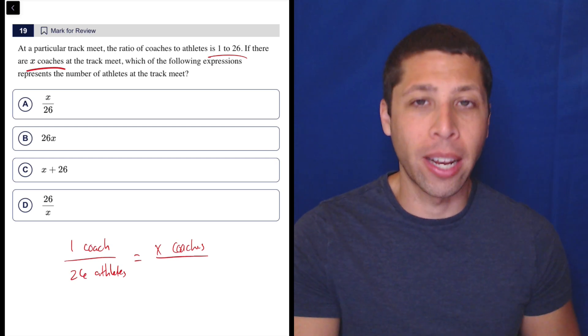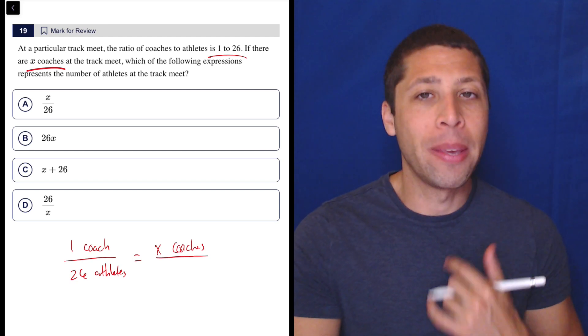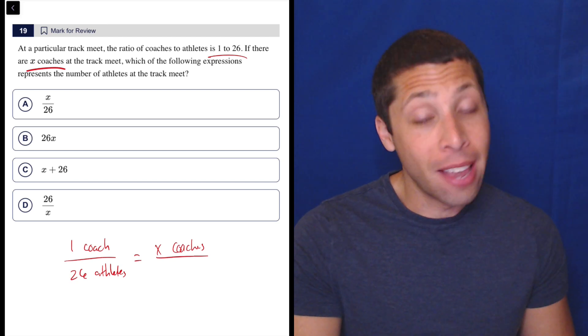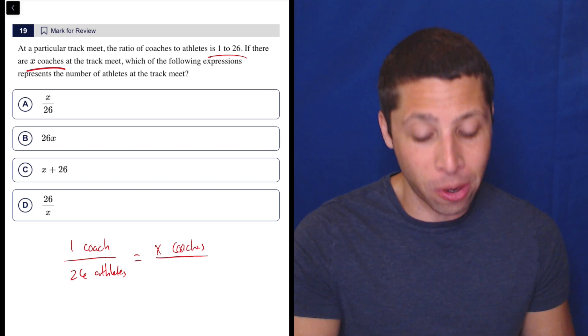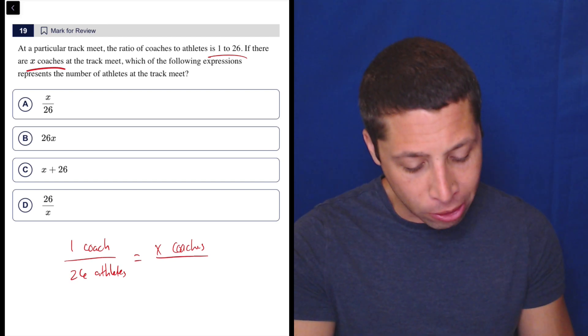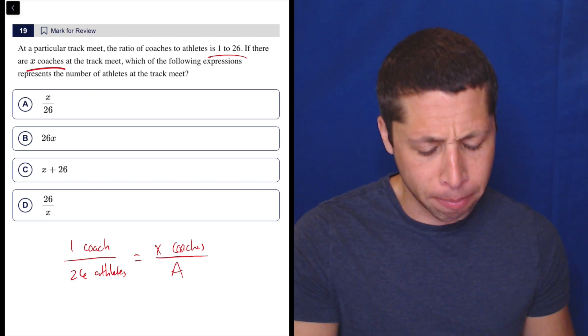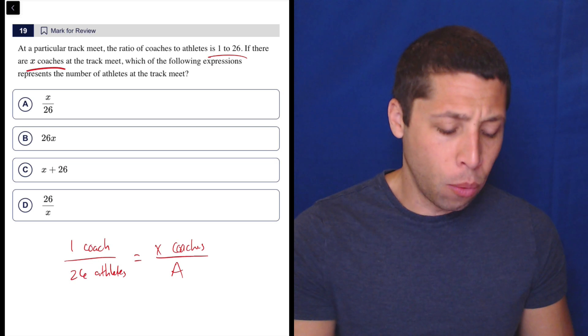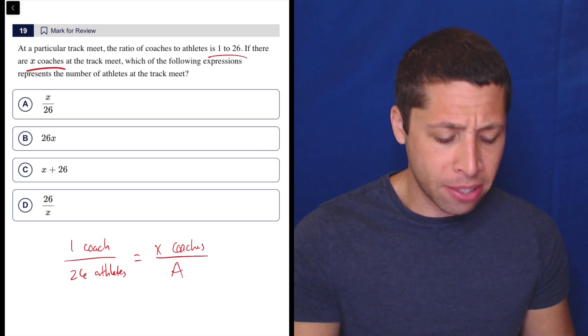I want to keep the units consistent because that is the biggest mistake. And if we didn't do that correctly here, we would get one of these wrong answers. So what they want then is the number of athletes. I'm just going to use a big A to represent that. So in a way, what I'm basically doing is I'm saying, let me solve for A.